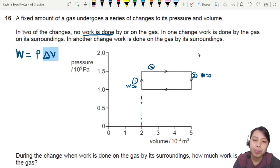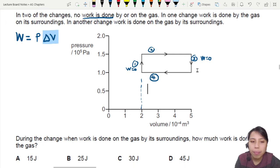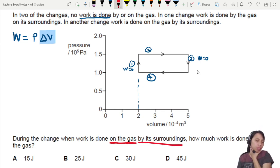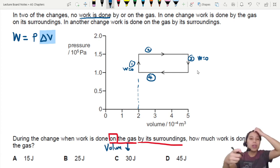Then it boils down to two and four. They ask us to find work done on gas by surrounding. That is extremely important. You want to highlight or underline that. Work done on the gas by the surrounding. So if work is done on the gas by surrounding, it's like the outside compresses the gas and it becomes smaller. So when it's work done on gas, you want to see the volume decrease.